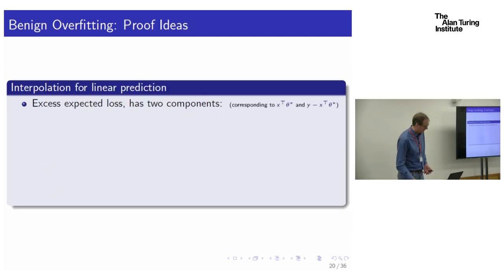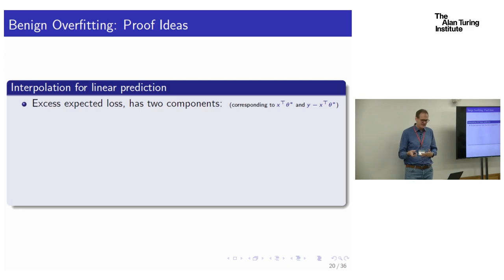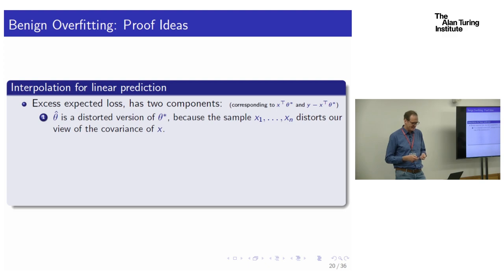Let me give a quick tour of the proof ideas. The key observation is classical: we split the excess expected loss into two components — one due to the signal part, corresponding to the best linear prediction, and everything else, the noise part. These two components give us the first term and the last two terms. The first term comes because theta-hat is a distorted version of theta-star — we're seeing it through the sample rather than the actual covariance matrix. That's classical.